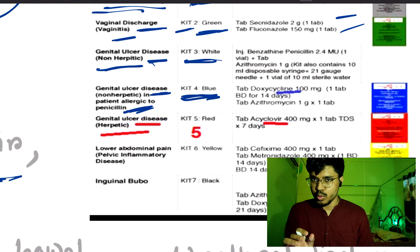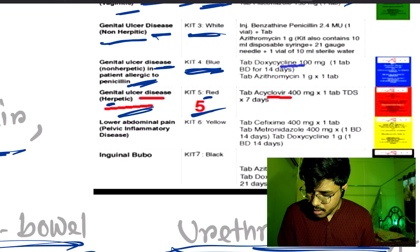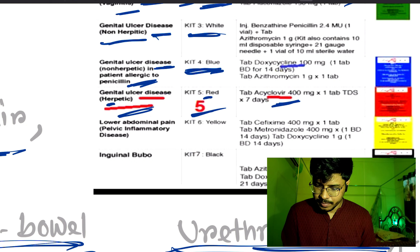Quick revision: blue pen — blue kit for penicillin-resistant cases. Red kit, herpetic — R for red, kit number five, composition is acyclovir. Lower abdominal pain — EOLO mnemonic, kit six, used in PID (pelvic inflammatory disease). Inguinal bubo — black kit, number seven, at the end of the list. This is the whole summary; try to frequently revise it and you can easily remember it.